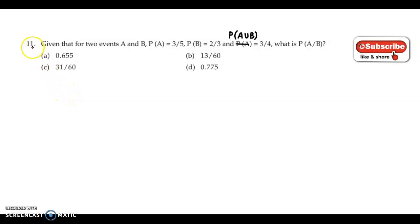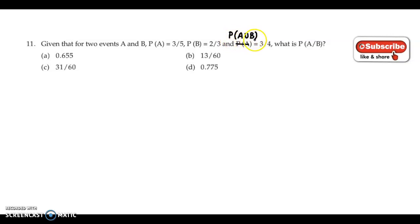Now, let's discuss question number 11. Given that for two events A and B, probability of A is 3/5, probability of B is 2/3, probability of A union B is 3/4, and we have to find probability of A given B.